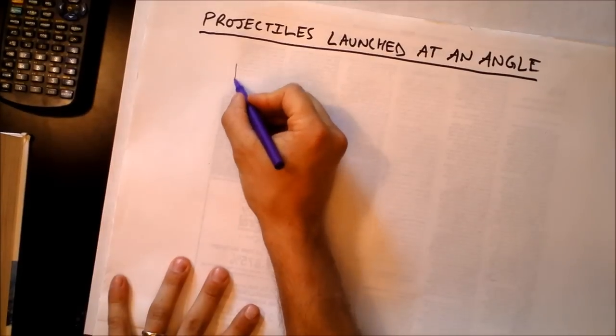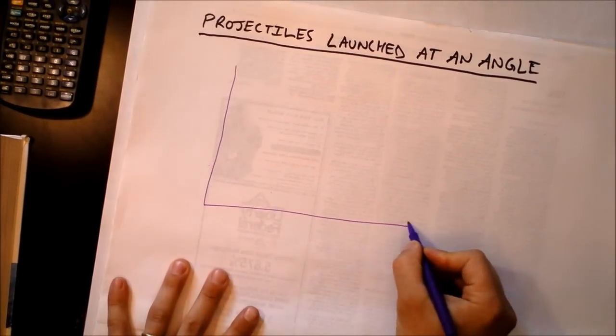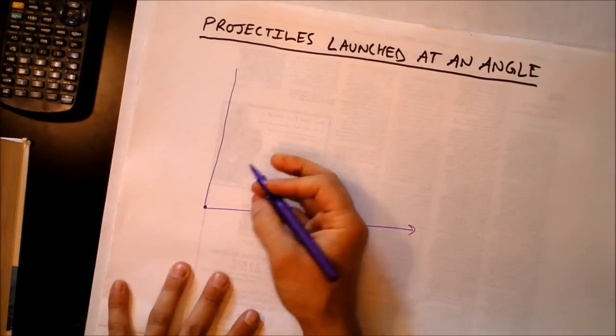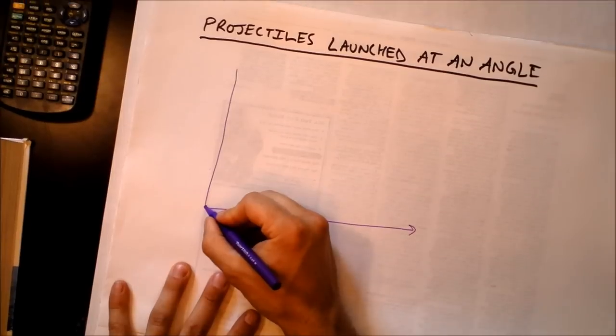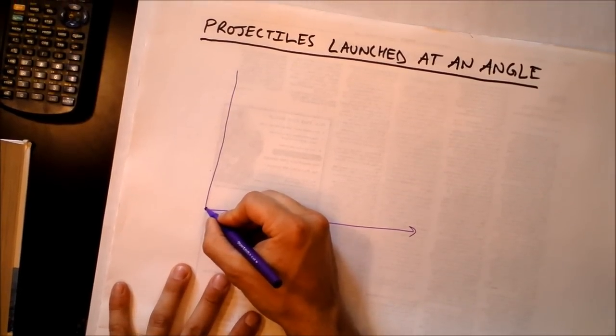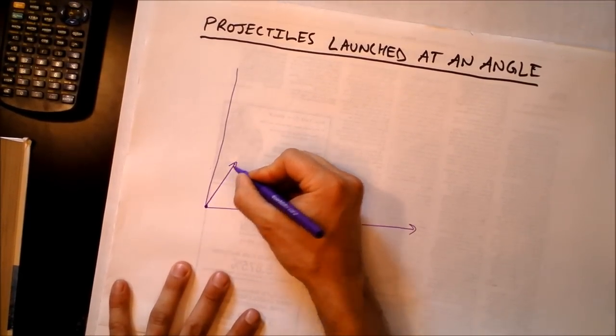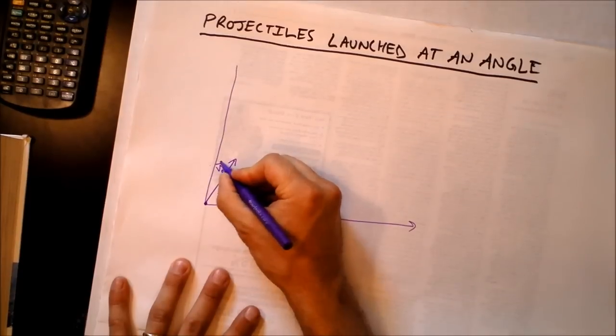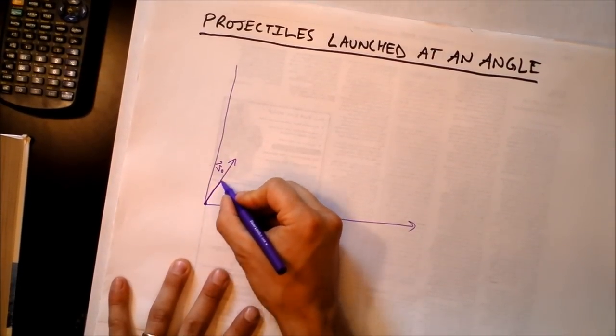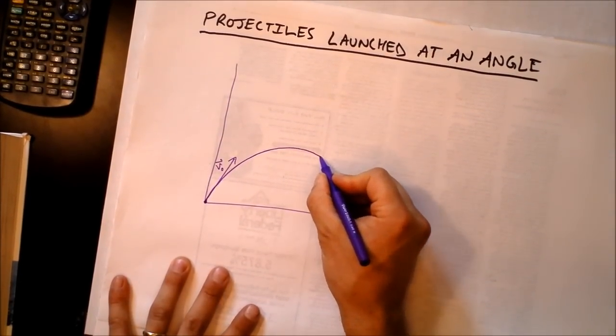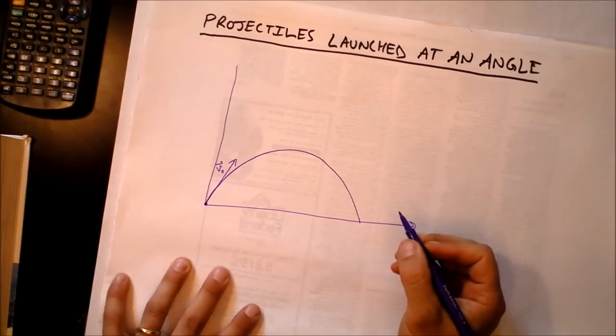Instead, I'd like you to consider a flaming volleyball. You start from the origin right here and you throw it or hit it or spike it or something. It has an initial velocity and it does experience parabolic motion.